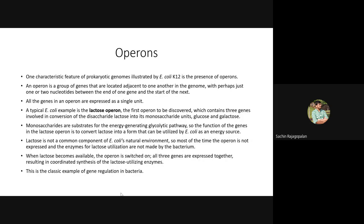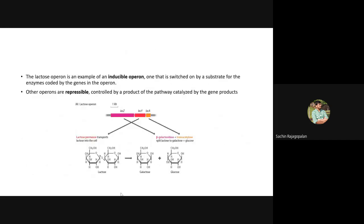When lactose is made available to E. coli, the lac operon is switched on; if lactose is not available, the lac operon is switched off. Once you make lactose available, all three genes will be expressed together and lactose metabolism will begin. This tells us how tightly genetic expression is regulated even in bacteria — you do not express any genes until and unless it is essential. That is why the lactose operon is an example of an inducible operon, expressing its genes only when lactose is made available.